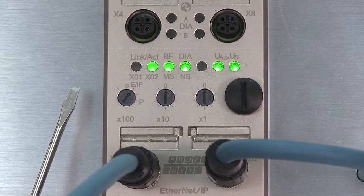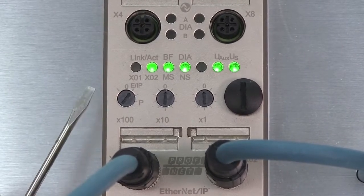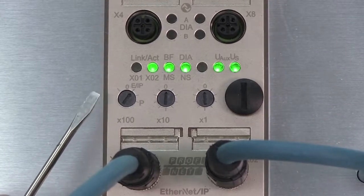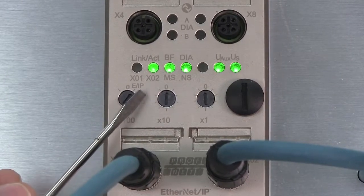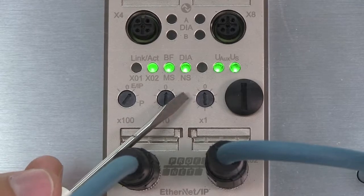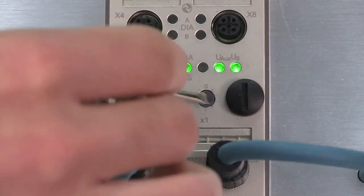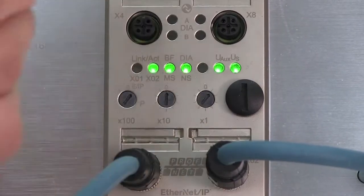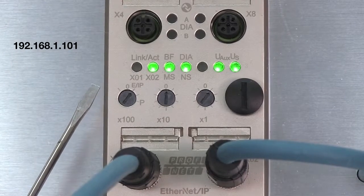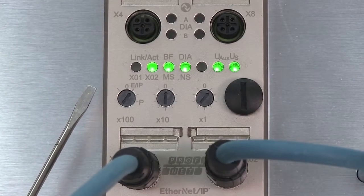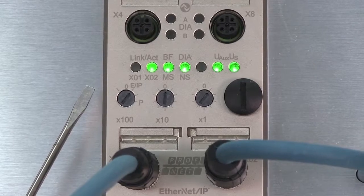By setting the rotary switches to X100 equaling 1, X10 equaling 0, and X1 equaling 1, the IP address of the module is 192.168.1.101 for Ethernet IP configuration.